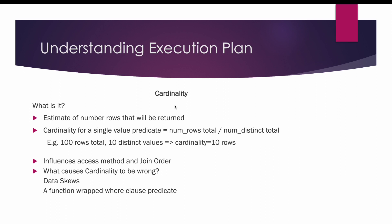As data gets inserted, updated, or deleted, the estimation of cardinality can go wrong. One possible cause is data skews — when the data distribution is not uniform across the table. For example, in an employees table with 100 rows, there may be only one row that is male and 99 rows that are female. This is a typical example of data skew.